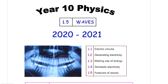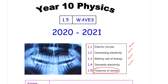Hello Year 10, this is the fifth and final topic of Year 10 Physics for Double Science. You can see here, as I'm ticking them off, all the topics you've done so far, and waves or features of waves is this final topic.